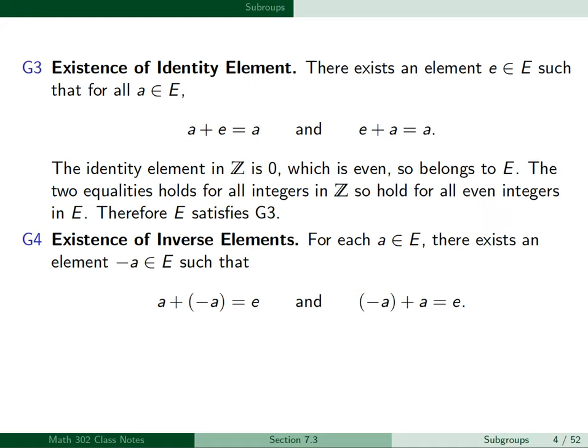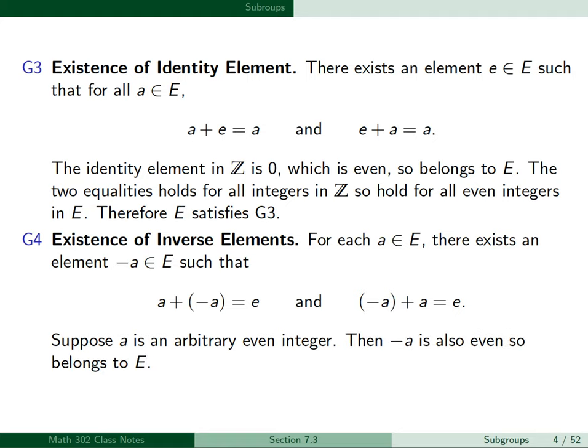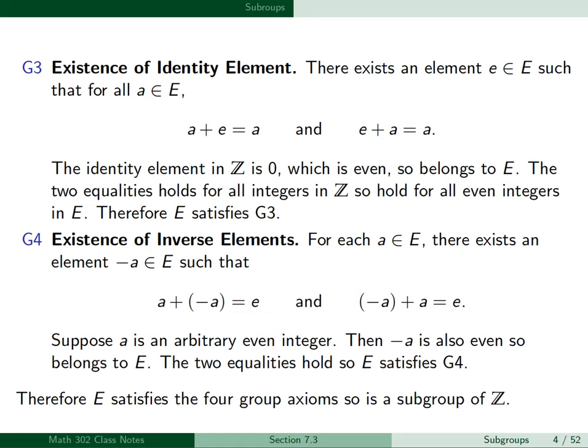Next, G4, existence of inverse elements: for each A in E, there exists an element minus A in E such that A plus minus A equals E and minus A plus A equals E. If A is an arbitrary even integer, then minus A is also even, so belongs to E. The two equalities hold, so E satisfies G4. Therefore, E satisfies the four group axioms, so is a subgroup of Z.